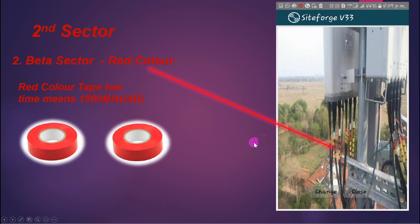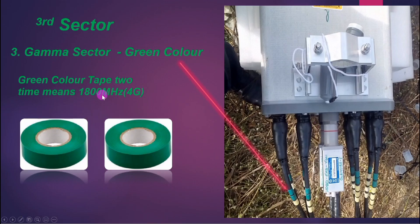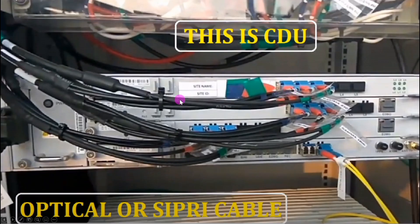Now we have the third sector, called Gamma sector. For Gamma sector we generally use green color tape. In this example picture you can see two-time green color tape marked on the jumper. They also need to mark the same on the RET cable. Green color tape means Gamma sector, and two-time tape means 1800 megahertz for 4G technology.